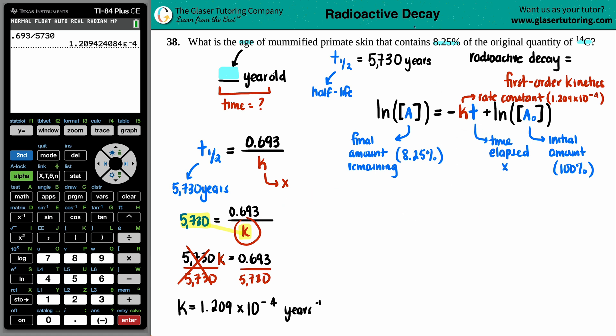And now we can solve for the time, the time that has elapsed. How much time, years has elapsed to make you how many years old you are. Sometimes I say to myself, where am I? Doing too many problems, got to take a break sometimes. But we just got to keep going. ln of 8.25 equals negative that K value, which was 1.209 times 10 to the negative fourth times by the X value. That's the time. And then we have 100%.